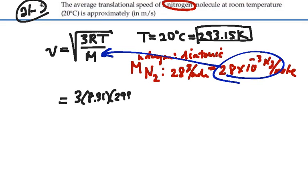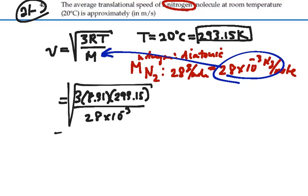over 28 times 10 to the minus 3, all this square root. So that gives me 510.9 meters per second.